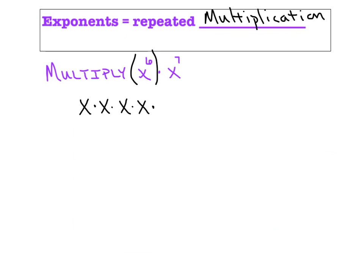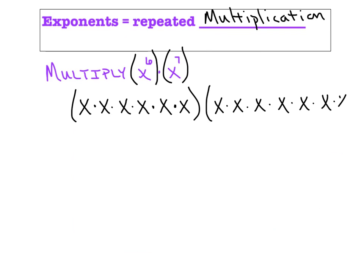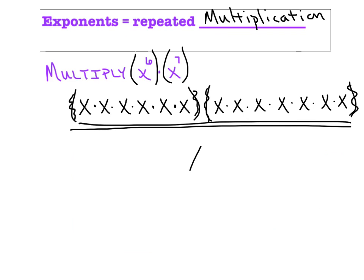Going in slow motion here — there's x to the 6th in expanded form. When we say x to the 7th, we're just repeating the multiplication 7 times: 1, 2, 3, 4, 5, 6, and 7. These parentheses aren't terribly necessary, so by the time we drop them and multiply all those x's together, we'd end up with x to the 13th, because we're repeating the multiplication 13 times.